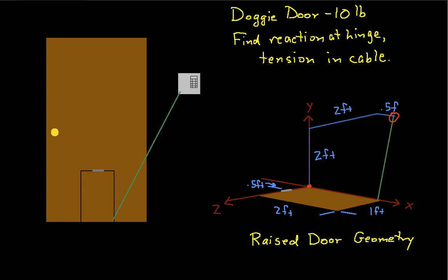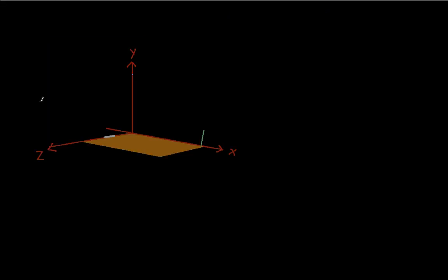So the next thing to do then is build ourselves a free body diagram. So here is the door itself and we have one force acting on the door which is the tension in the cable, which is this guy right here. We know its direction but we don't know its magnitude. So I'll call its magnitude T. We assume that the weight of the door, which is 10 pounds, is applied at the centroid of the door. We'll assume the door is uniform.